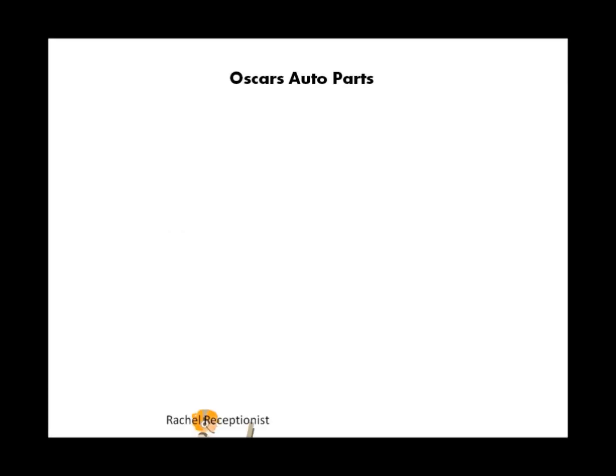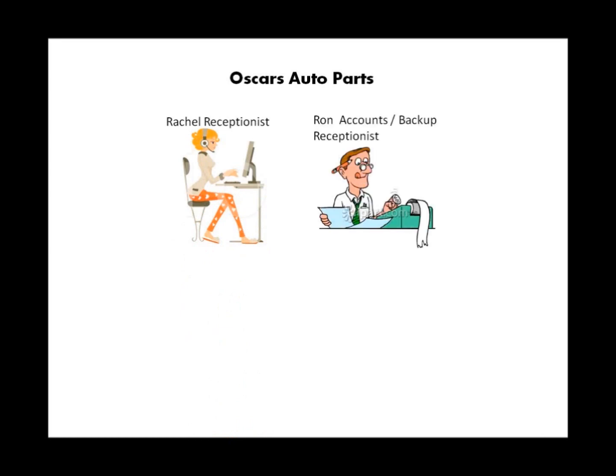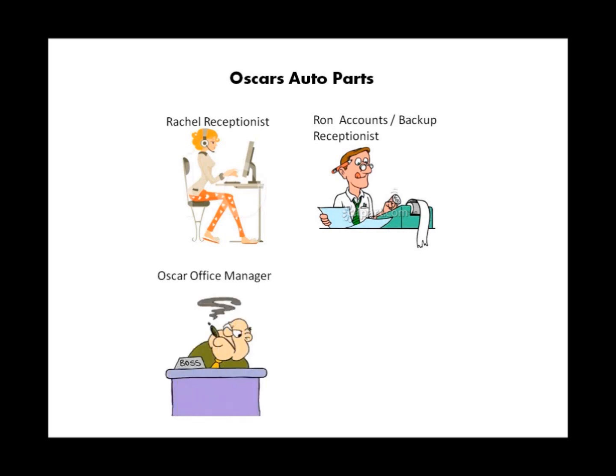The story starts in a small business called Oscar Auto Parts. There are four characters in this story: Rachel the receptionist, who takes most of the end customer calls; Ron the accountant, who takes some calls when Rachel is not available; Oscar the office manager, who is the big boss; and Peter the part specialist.